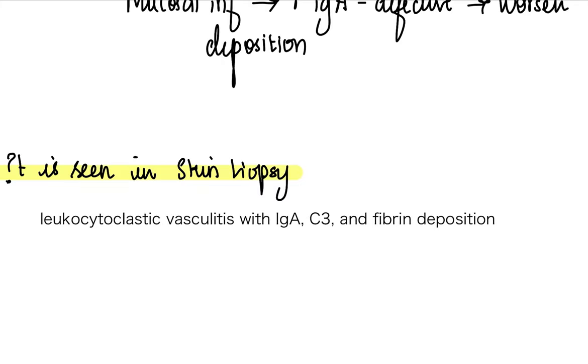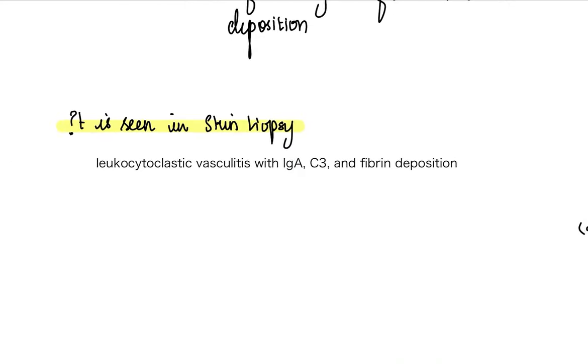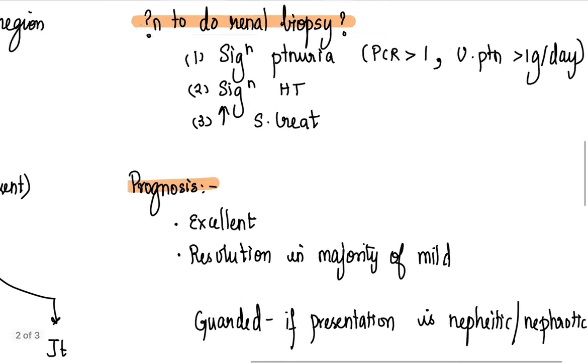If you want to do a skin biopsy at this point to look at your skin or your gut or your kidneys, what do you see? You see leukocytoclastic vasculitis with deposition of immunoglobulin A, C3, and fibrin. This is the classical pathological feature in Henoch-Schonlein purpura.